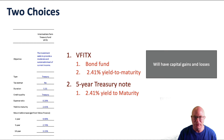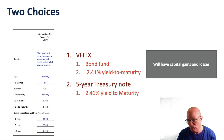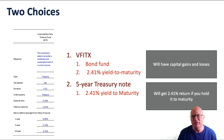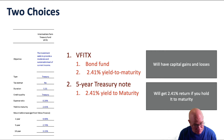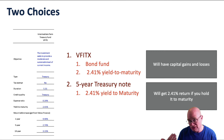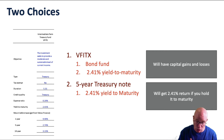If you buy the bond fund, you will have capital gains and losses every day, and you really don't have control over that. On the other hand, if you buy that five-year treasury note and hold it to maturity, you will get a 2.41% return. You have total control over getting that return. You could sell it earlier and take a capital gain or loss at that point — that would be your option — but if you hold it to the end, you will get a 2.41% return.